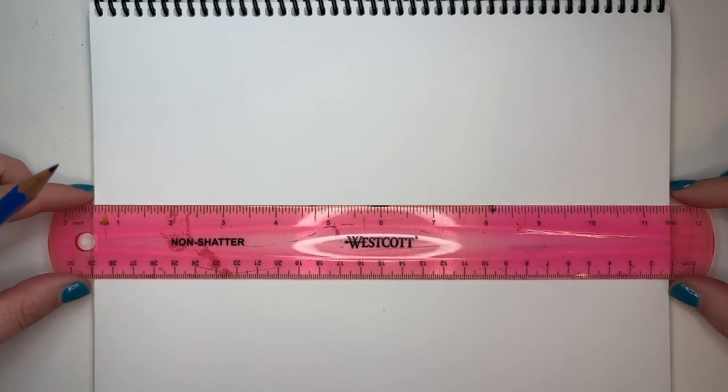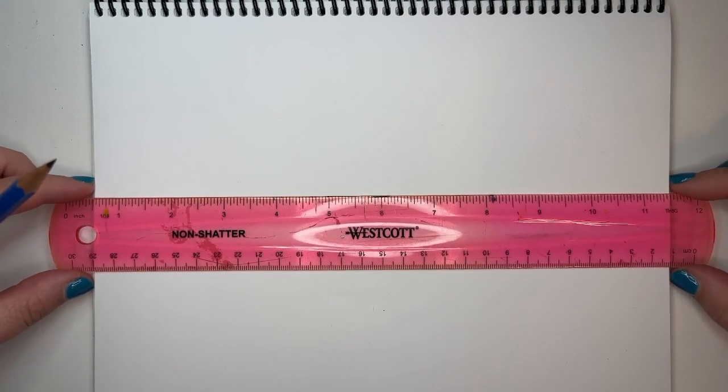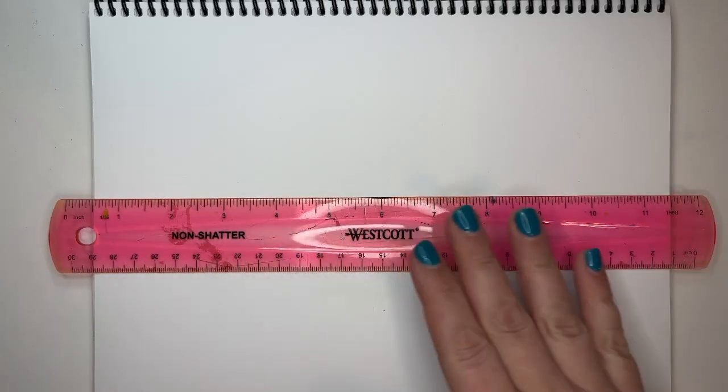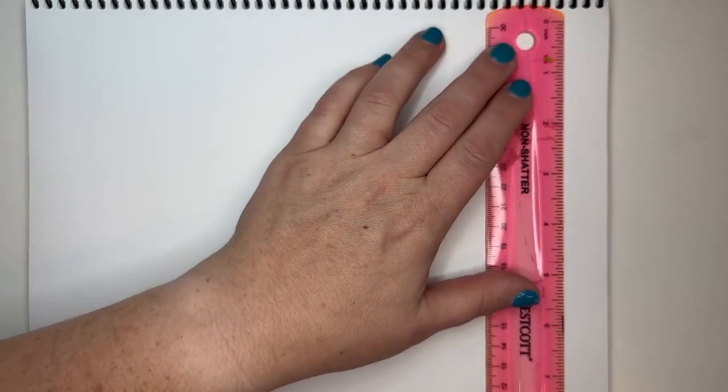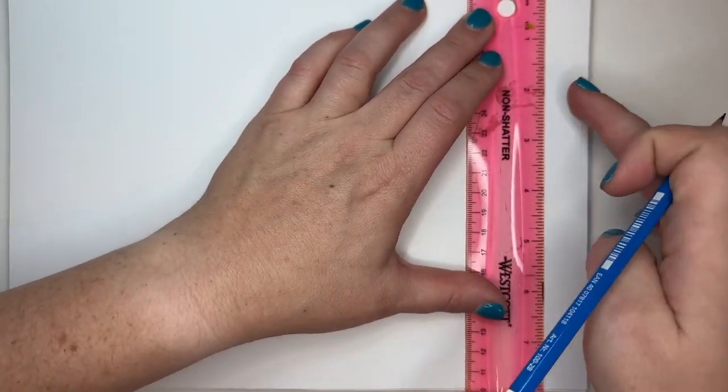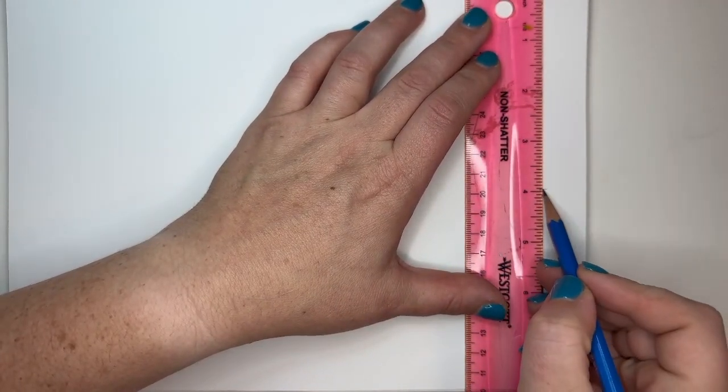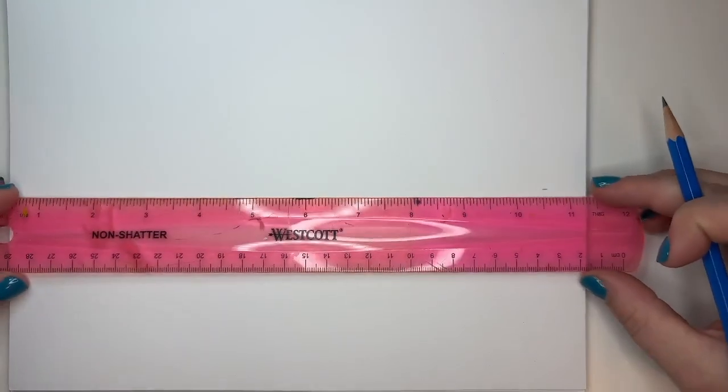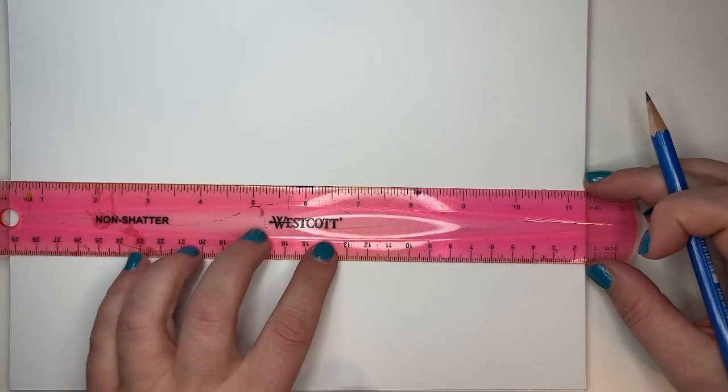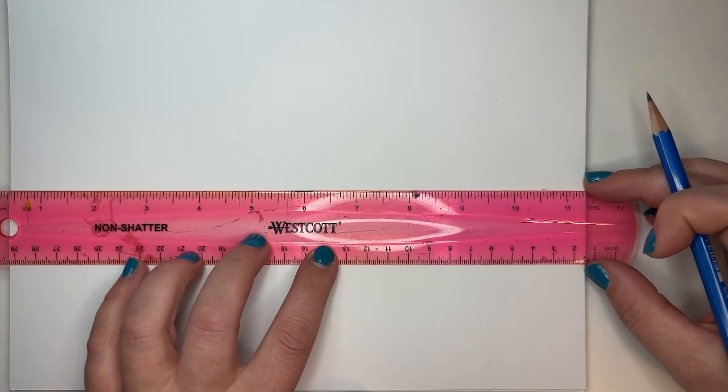But a lot of times, for just these basic boxes, I usually go somewhere in the middle. Now, you can certainly measure your paper. So mine's 8 inches, so I can put a little dash at the 4, and then when I draw my line, I can get in the center.